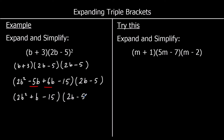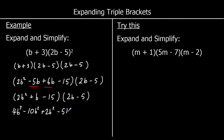And we've got (2b - 5) still as the other bracket. So now we're going to expand and simplify again. 2b squared times 2b: 2 times 2 is 4 and b squared times b is b cubed, so 4b cubed. 2b squared times negative 5 is negative 10b squared. b times 2b is 2b squared. b times negative 5 is negative 5b. Negative 15 times 2b is negative 30b. And negative 15 times negative 5 is positive 75.